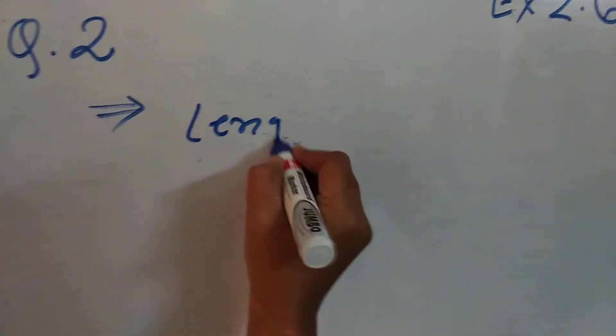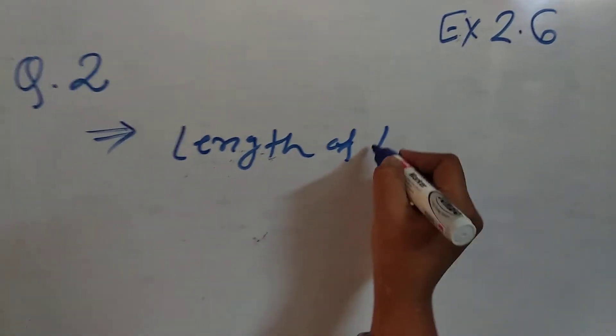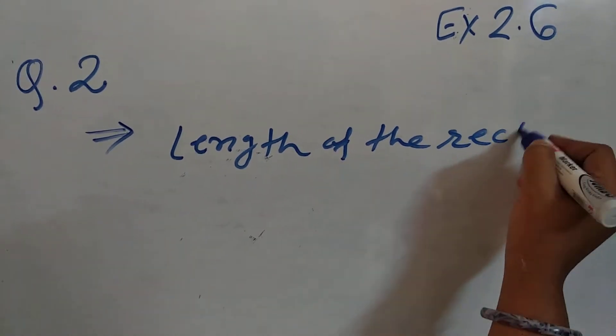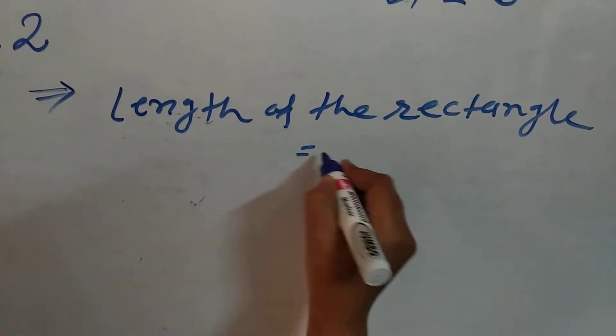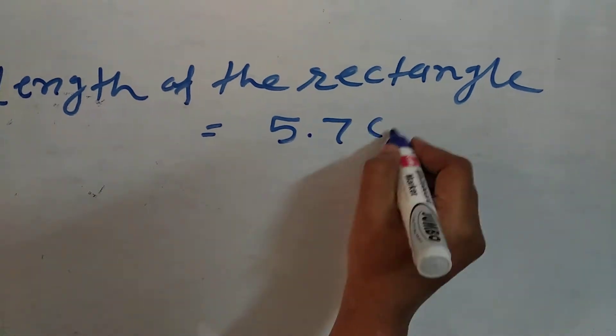Now, solution. Here, we will write length of the rectangle is equals to 5.7 cm.